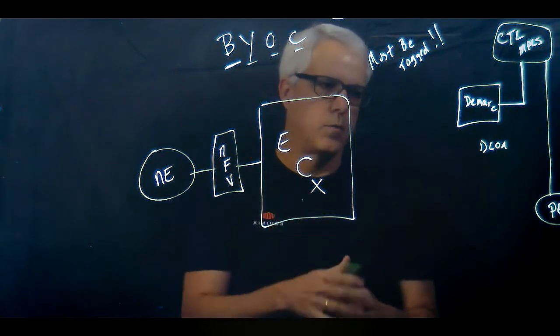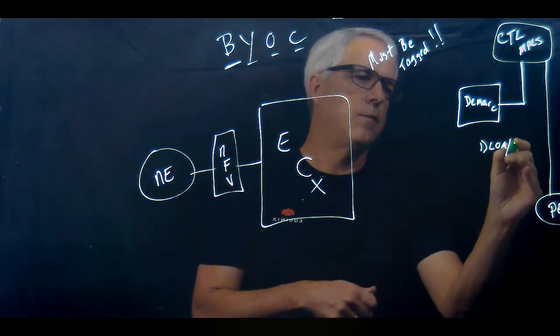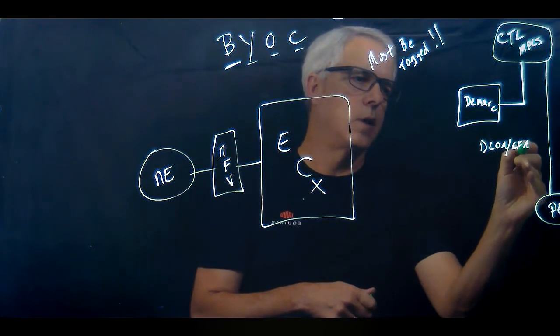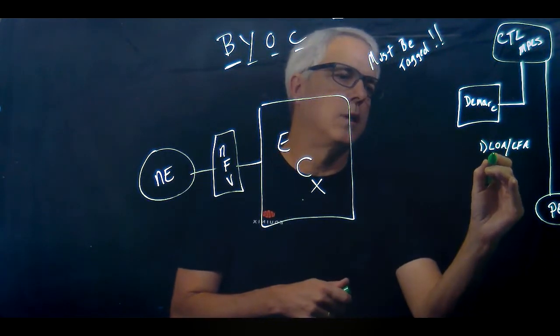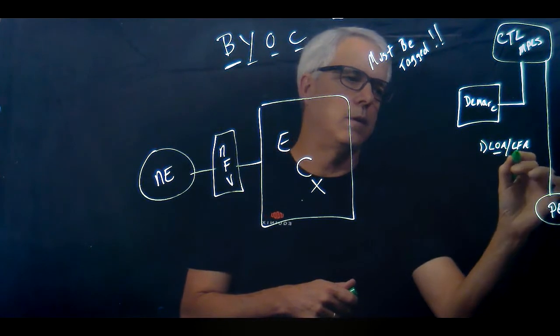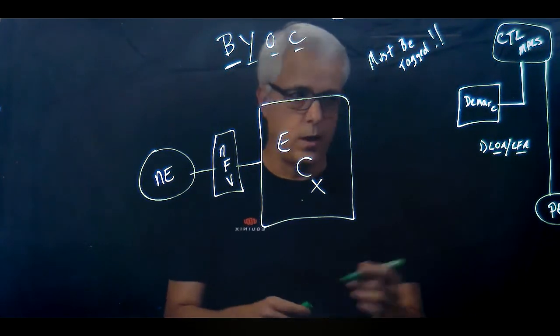So it tells them where it's at and then the authorization. You'll hear CFA, Channel Facility Assignment, but the LOA portion of it gives them permission to do it and the CFA portion of it tells them where to do it.